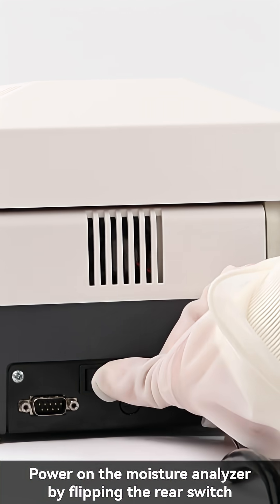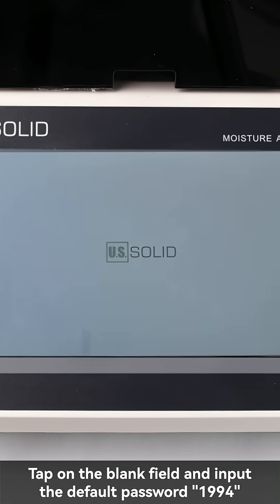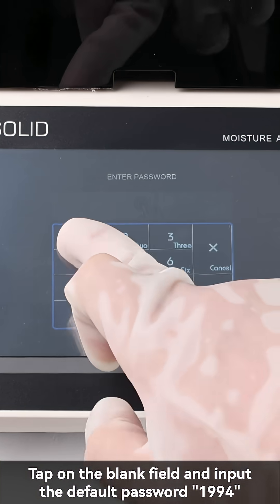Power on the moisture analyzer by flipping the rear switch. After the power cord is connected, tap on the blank field and input the default password 1994.